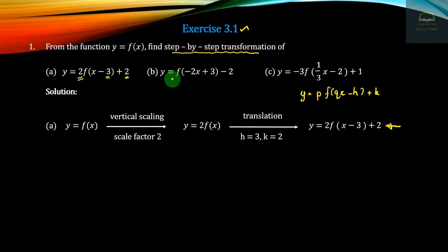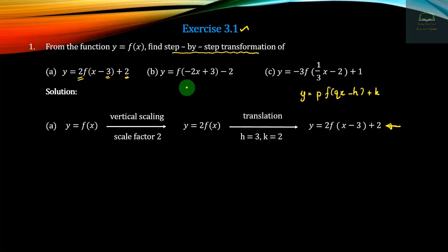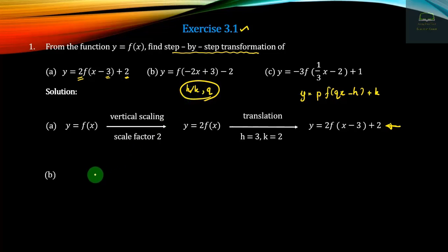Number b, minus p is equal to 2. So if y is equal to 1, then h plus k is equal to 1. Number b is equal to 1, then h plus k is equal to 1. So if y is equal to 1, then h plus k is equal to 1. And the same thing — the original function is equal to f.